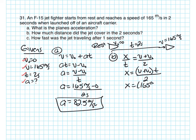So X is equal to the final velocity, 165 meters per second, plus 0 times the time, which is 2 seconds, divided by 2. So in this case, X is 165 meters.